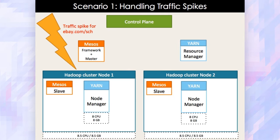Let's look at a scenario where we can use this architecture for handling traffic spikes. Assume that in your data center you're running a Yarn cluster with a Hadoop cluster. The Mesos cluster is being used to serve site traffic, while the Yarn cluster is used for offline batch processing jobs. In an event of a traffic spike, you want to make use of the spare capacity on the Yarn cluster for failover. These two nodes are from the Hadoop cluster, running the node manager as the only process — so the node manager gets pretty much all resources on the node. Let's say there's a traffic spike on eBay.com and one of the pools, the SCH pool, is under load. We want to deploy additional instances of that application on the Hadoop cluster.